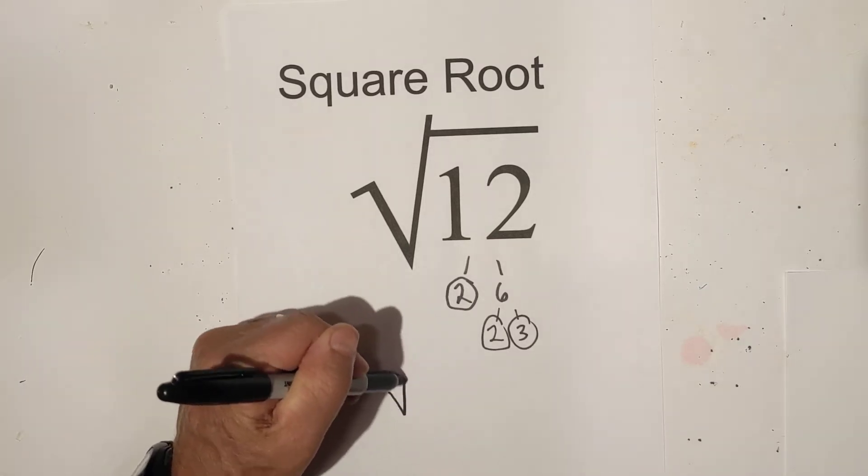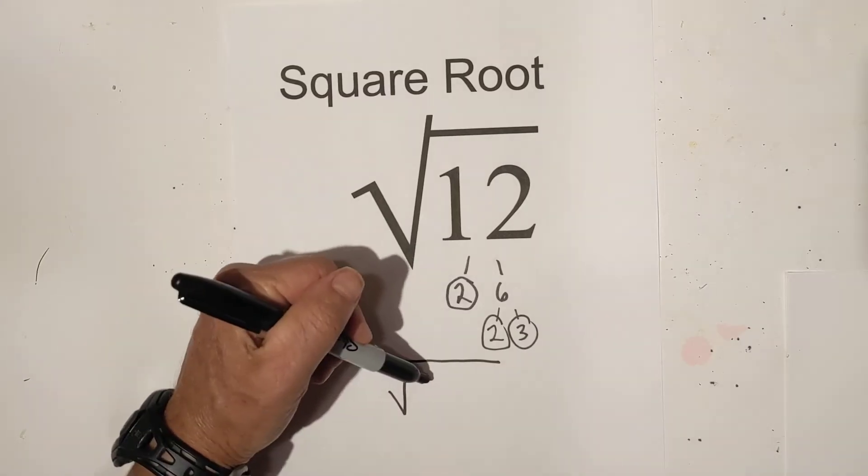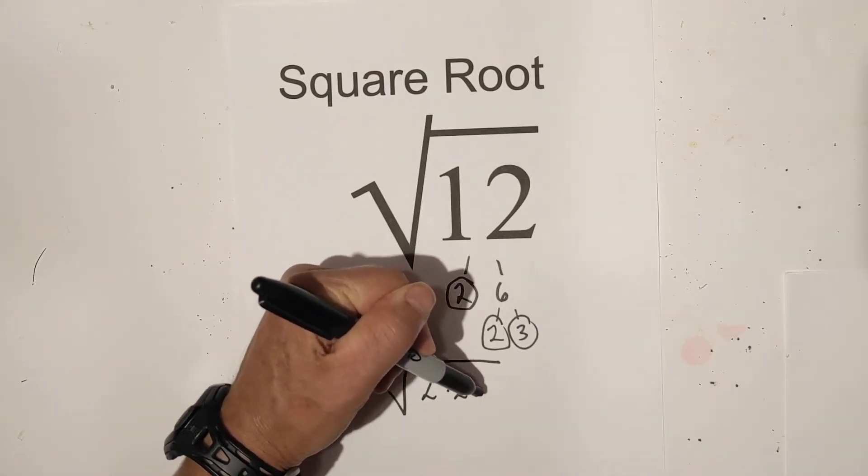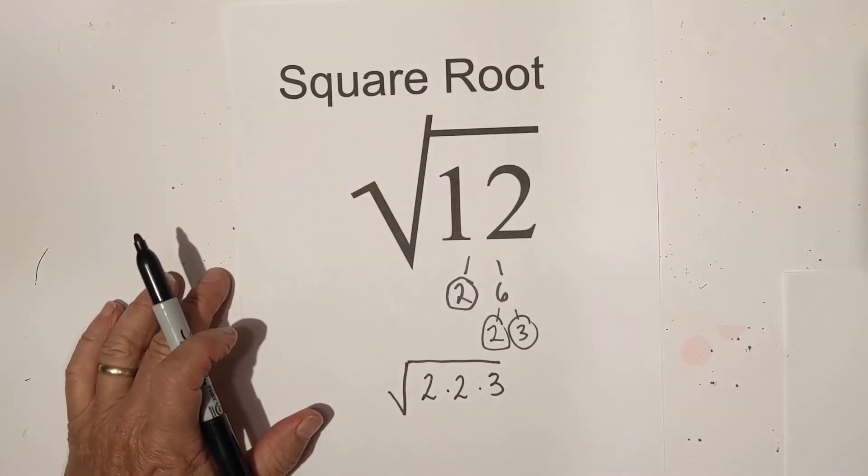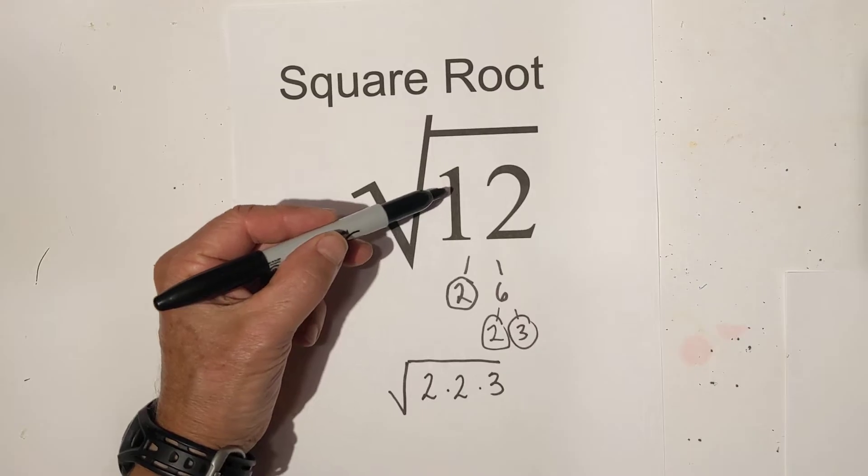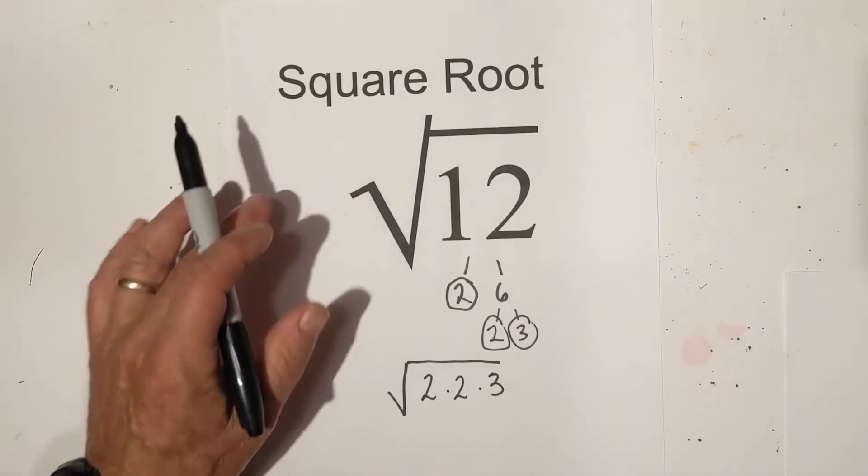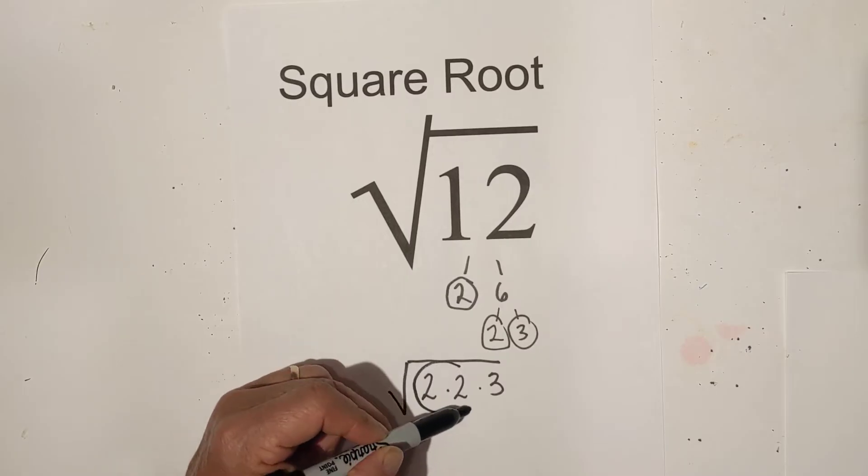What I like to do is rewrite all of the prime numbers under the radical sign. So I have two times two times three. Now a square root is merely what two numbers multiplied together equal this number. So they are pairs. So what I do is I look for pairs of numbers. And we have a pair of two.